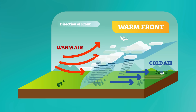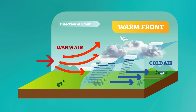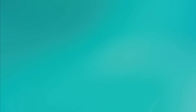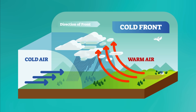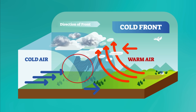A warm front occurs when a warm air mass moves into an area where a cooler air mass has been. As the warm air mass rises over the cooler air, it often cools and condenses into stratus clouds, leading to long periods of light rain. The weather after a warm front passes tends to be warmer and more humid. A cold front occurs when a cold air mass moves into an area where a warmer air mass has been. The cold air mass sinks under the warm air, causing the warmer air to rise rapidly and cool, which can lead to towering cumulonimbus clouds and thunderstorms. Cold fronts often bring short but intense storms, and the weather after a cold front passes tends to be cooler and less humid.